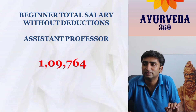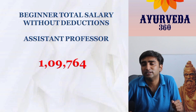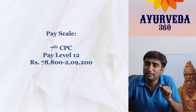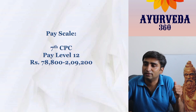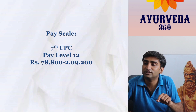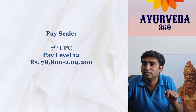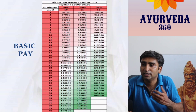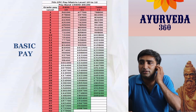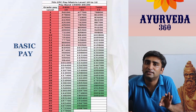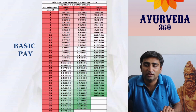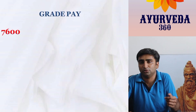Moving to Associate Professor: the pay scale is Level 12 under the 7th CPC. The basic starts at ₹78,800, going up with annual increments to ₹81,200 and so on. The grade pay for Associate Professor is ₹7,600, higher than that of Assistant Professor.